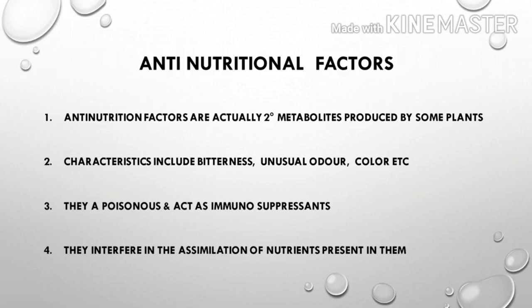Here are the major characteristics: bitterness, unusual odour, colour, and flavour. For example, in coffee, cyanide is an anti-nutritional factor. The key characteristic is that they interfere in the assimilation of nutrients present in food. That is the basic idea of anti-nutritional factors.